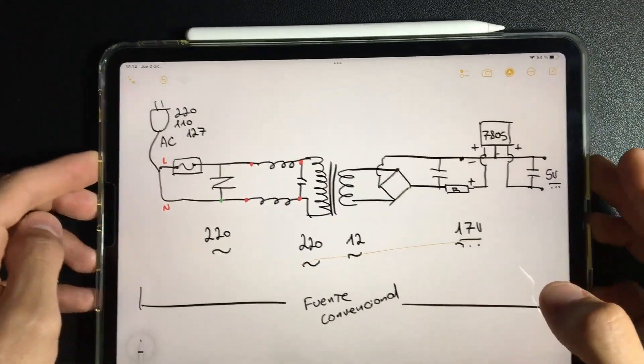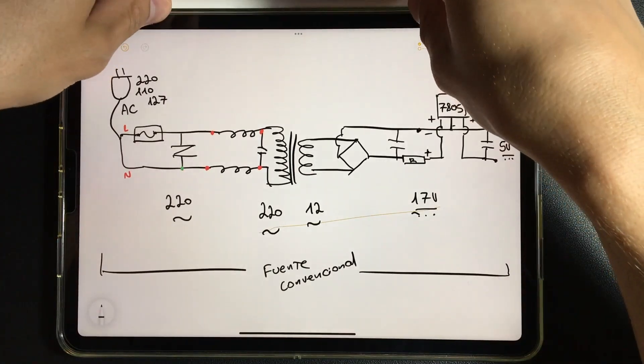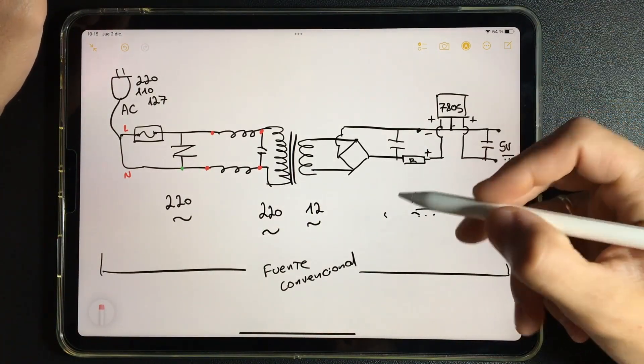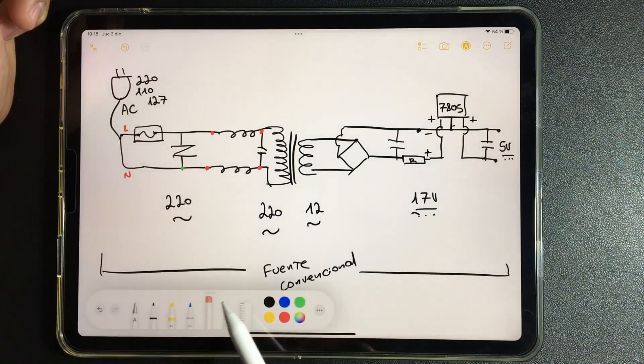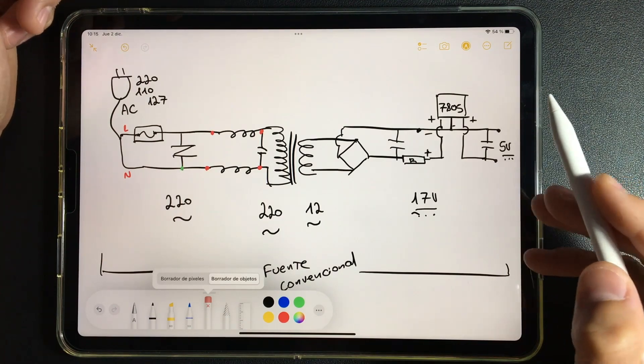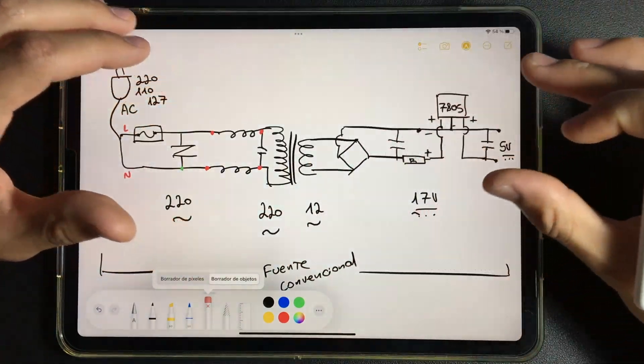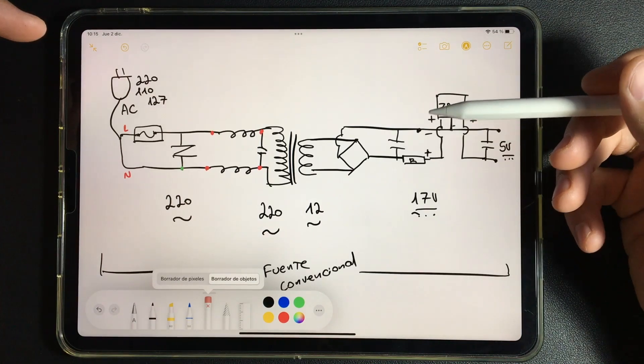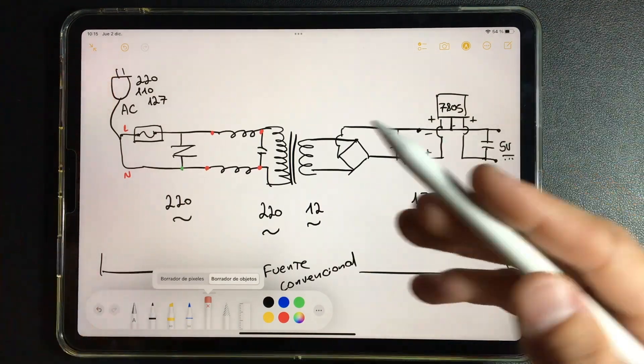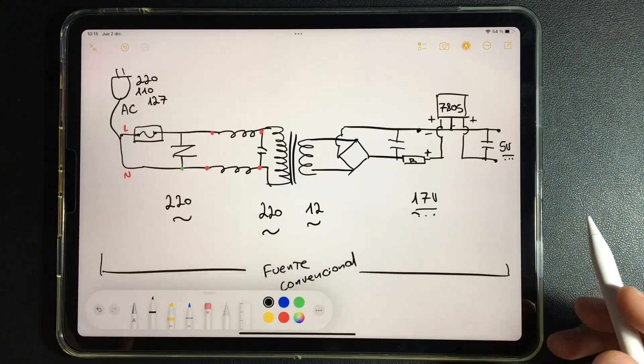Up to this point we have been talking about conventional power supplies. However, in inverter technology we generally find more complex power supplies: switched mode power supplies. What do we mean by that? We refer to systems that transform electricity, modify it, and leave it ready to work, but they are more complex and more efficient.